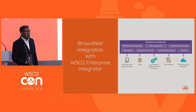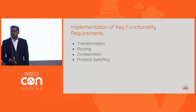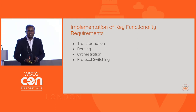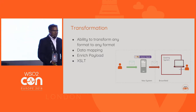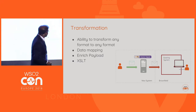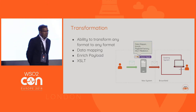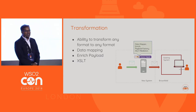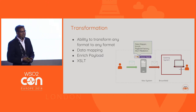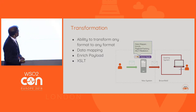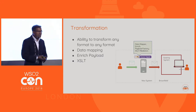Let's look at how we can perform brownfield integration with the functionality provided by the Integrator Runtime. The key functional requirements are transformation, routing, orchestration, protocol switching, etc. Here we have placed the Enterprise Integrator as the new system to implement the integration. In order to perform transformations, the Enterprise Integrator provides several mediators. A mediator is a key component providing functionality within the enterprise integrator runtime. The Data Mapper mediator allows us to do visual data mapping from one message format to another.